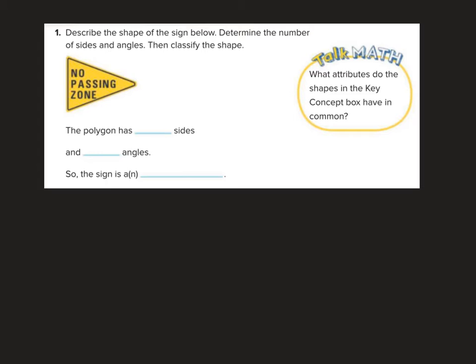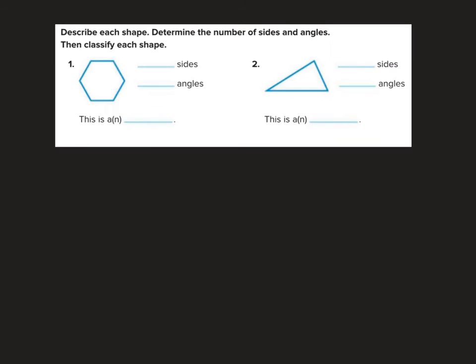Describe the shape of the sign below. Determine the number of sides and angles, then classify the shape. We've got one, two, three sides. One, two, three angles. So that is a triangle. Hopefully that one was super simple.